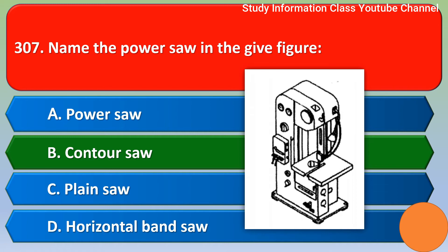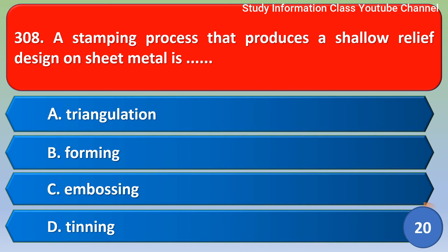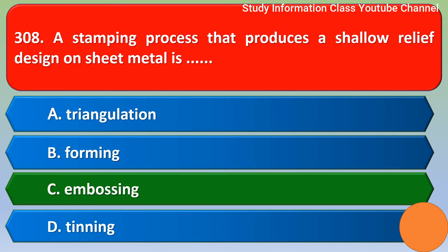Next question: a stamping process that produces a shallow relief design on a sheet metal piece. Option A: triangulation, Option B: forming, Option C: embossing, Option D: tending. For this question, the right answer is Option C, embossing. Option C is the right answer.